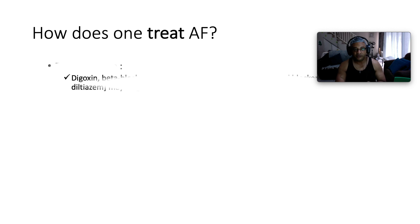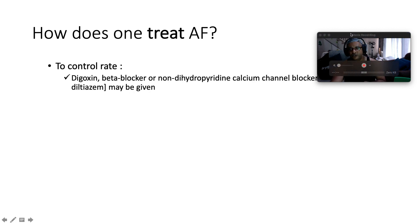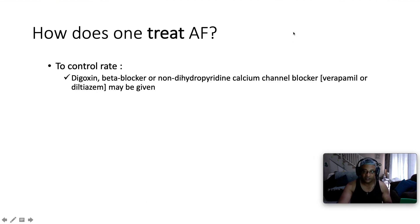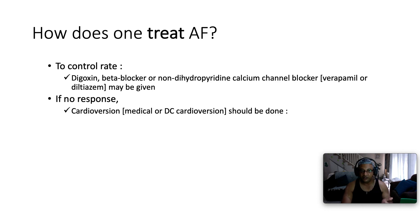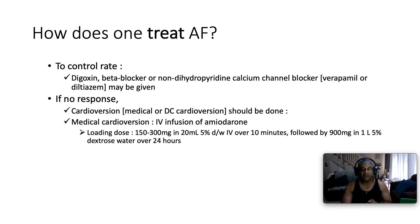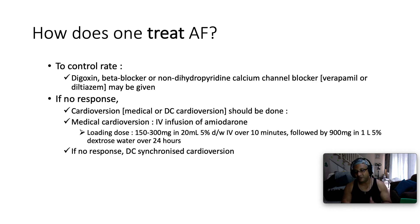For rate control, our options are digoxin, a beta blocker, or a non-dihydropyridine calcium channel blocker — either verapamil or diltiazem. If there's no response, then cardioversion. You can go medical cardioversion with drugs or electrical direct current synchronized cardioversion. For medical cardioversion, we often use amiodarone IV: load with 150 to 300 milligrams in 20 mls of 5% dextrose water over about 10 minutes, followed by 900 milligrams in a liter of 5% dextrose water over 24 hours. But if the patient is hemodynamically unstable from the outset, give electricity — direct current synchronized cardioversion — as the first prize.